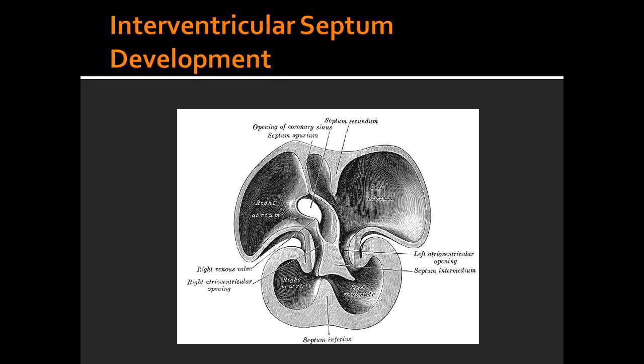Interventricular Septum Development. Describe what you see on page 250, picture 1, under interventricular septum development. On this picture, you see the interventricular foramen, you also see the atrioventricular canals, as well as the muscular ventricular septum.